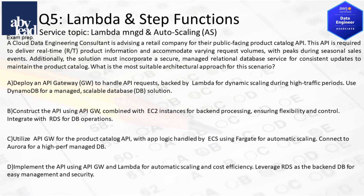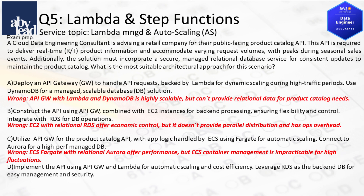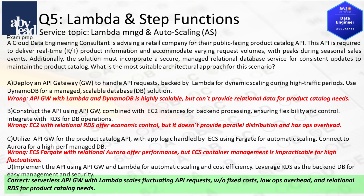Question 5: How do you securely store a relational product catalog for APIs with fluctuations and peaks? Don't store a relational product catalog in DynamoDB, and RDS with EC2 is slow with costly overhead. Moreover, Aurora with ECS Fargate container management is impractical. You better scale fluctuating APIs with low-overhead Lambda and relational RDS for the product catalog.